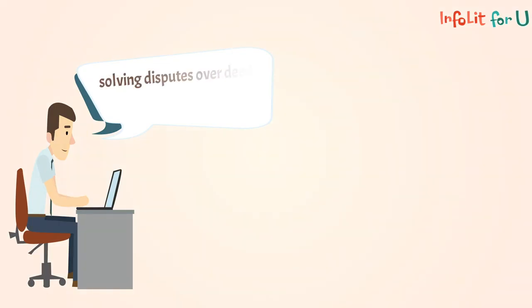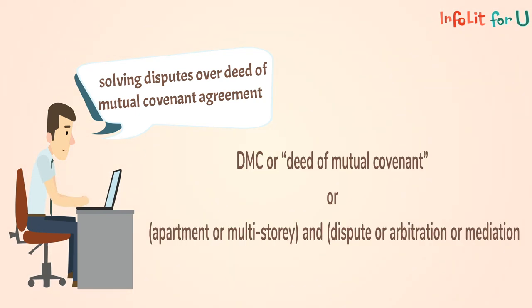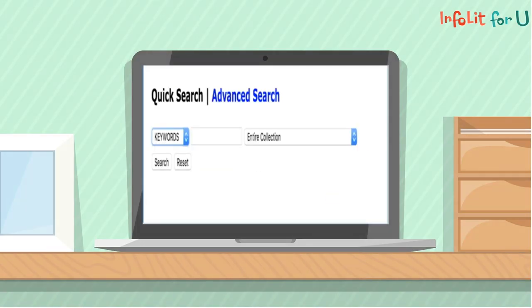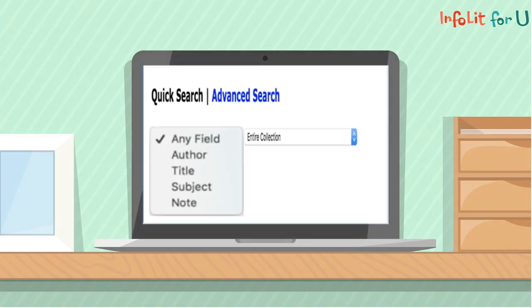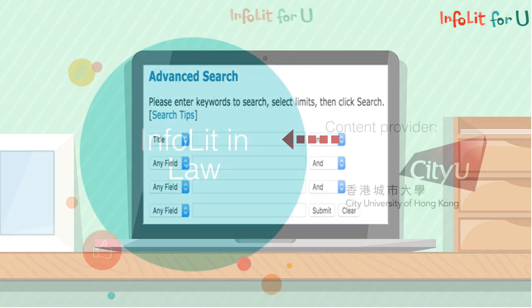If you want to find articles discussing the ways and means of solving disputes over deed of mutual covenant agreement, you can connect the search terms in this way. Remember to select an appropriate field from a search template to enter search terms. If you want to retrieve journal articles the major parts of which cover your topic, enter the search term in the title field.